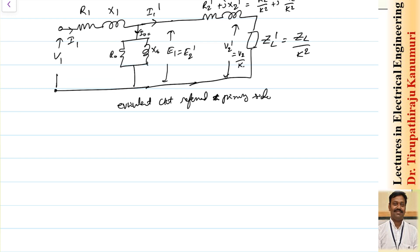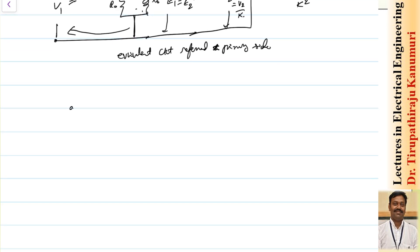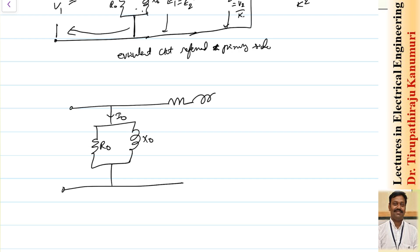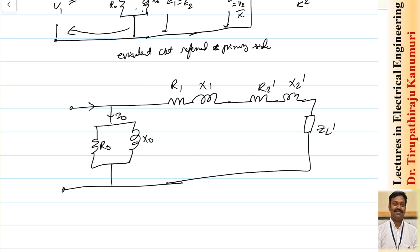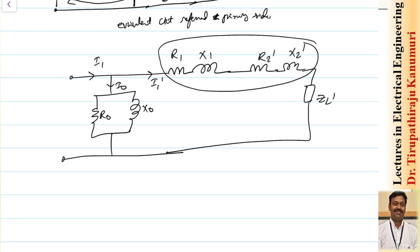To make analysis easier, since the no-load current I0 is only 4 to 8 percent of the full load current, we can shift the shunt branch to the source side without significantly affecting results. This gives the approximate equivalent circuit, where the shunt branch R0 and X0 is moved to the input terminals. The series resistance and reactance on primary and referred secondary sides can then be combined as R01 and X01.